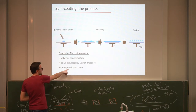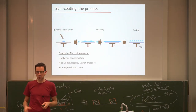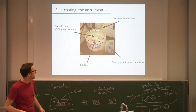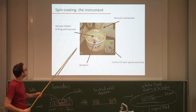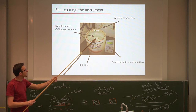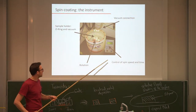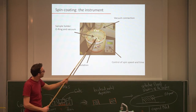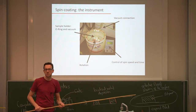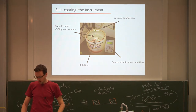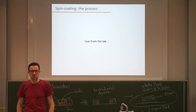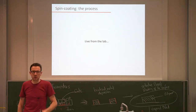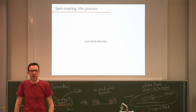To exercise control over spin coating, we can control film thickness via the concentration of the polymer — higher concentration gives a thicker film — but also as a function of the solvent viscosity and vapor pressure. Spin speed and spin time also control the evaporation process. This can be done with a relatively simple machine — a spin coater — which has a sample holder with an O-ring and vacuum connection to hold the substrate, a rotating table, and a digital controller for spin speed, spin time, and acceleration. Julia and Eric will now demonstrate this in the lab.